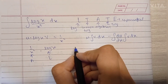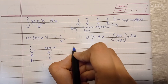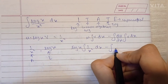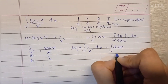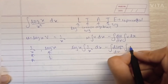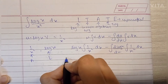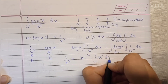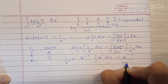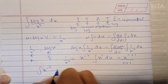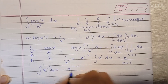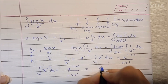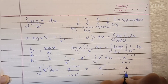Now let's apply this in the formula. We have u, that is log(x), into the integration of 1/x² dx, minus the integration of the differentiation of log(x) into the integration of 1/x² dx. Now 1/x² is basically x raised to minus 2, and the integration of x^n dx is x^(n+1) upon (n+1). So the integration of x^(−2) is x^(−2+1) upon (−2+1), which is x^(−1) upon −1, which is minus 1/x.